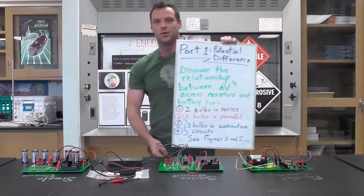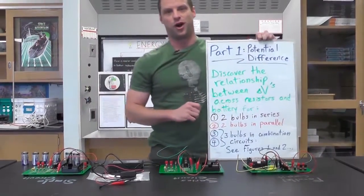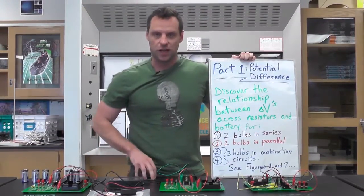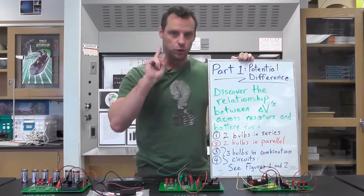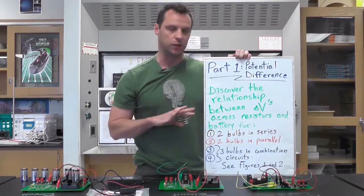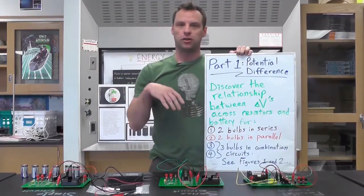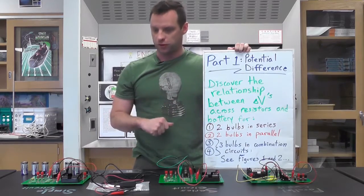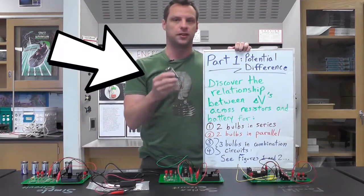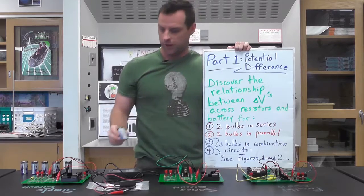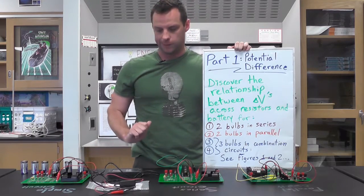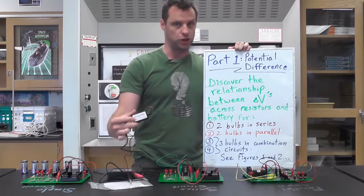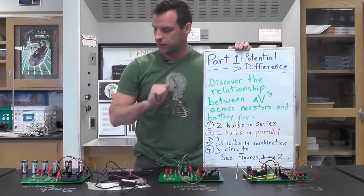Welcome to the lab for our AP Physics 1 circuits investigation. In this investigation you're looking at a two-parter — it's inquiry style, so your knowledge coming into this is meant to be a bit limited. You're supposed to know what a battery is and how to draw that on a circuit diagram, and you're supposed to know maybe what a voltmeter is — if you don't know, we're going to show you that in this video.